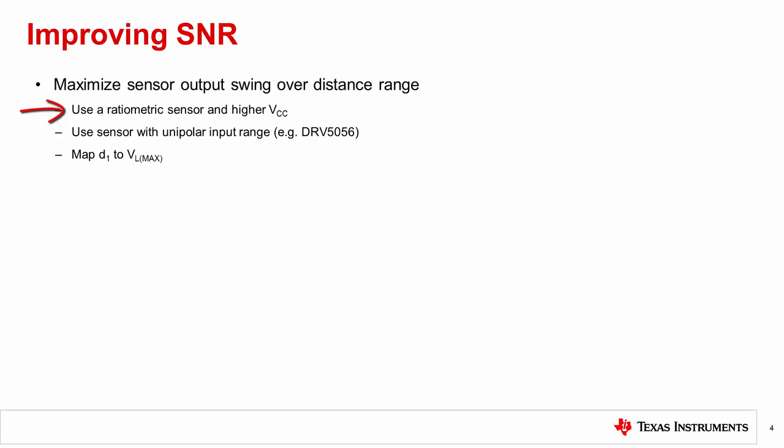On the other hand, the DRV5053, a non-ratiometric sensor, offers a fixed output range of about 1.6 volts at any supply voltage.